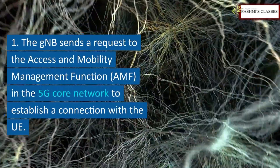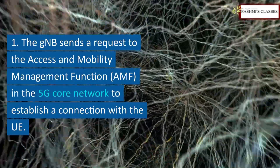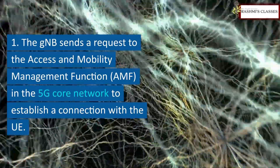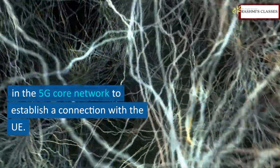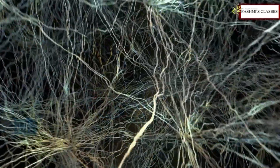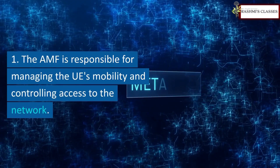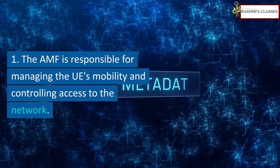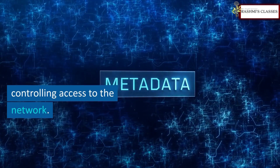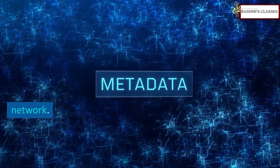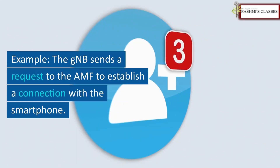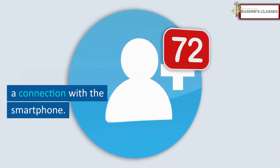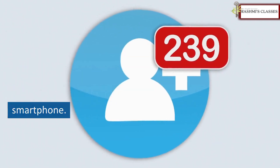The gNB sends a request to the Access and Mobility Management Function (AMF) in the 5G core network to establish a connection with the UE. The AMF is responsible for managing the UE's mobility and controlling access to the network. For example, the gNB sends a request to the AMF to establish a connection with the smartphone.